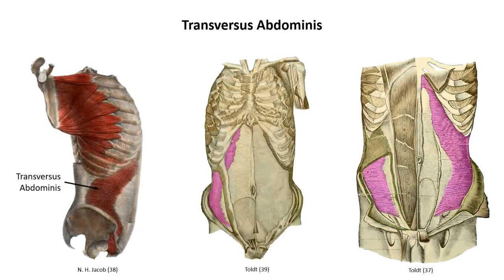The transversus abdominis also originates off the thoracolumbar fascia, but in this case the fibers all run in a transverse direction and fuse along the midline in an aponeurosis. The internal oblique and transversus abdominis work together to compress the abdominal contents and provide active tension and rigidity to the abdominal wall. This helps to brace the abdomen against mechanical trauma or aid in increasing intra-abdominal pressure, such as during defecation.